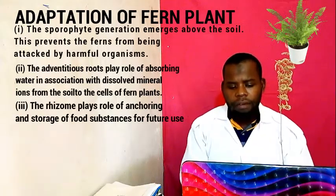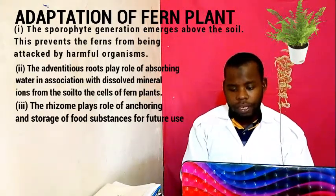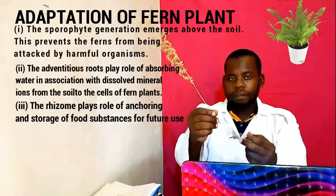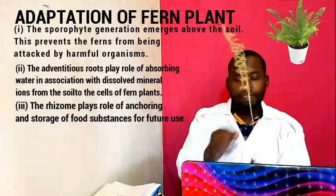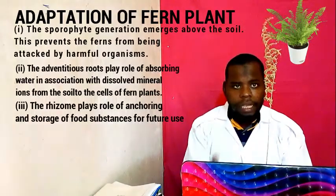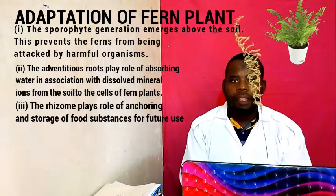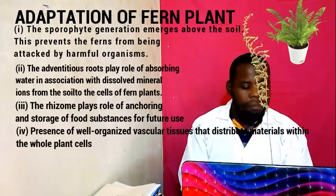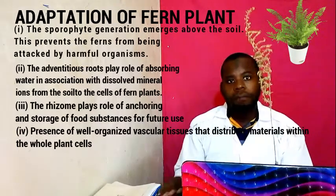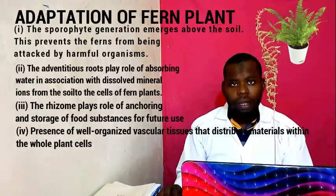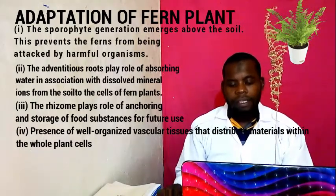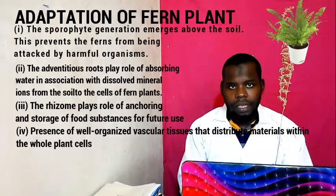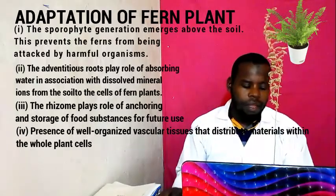It also has a rhizome for anchoring and storage of food substances for future use. The presence of the rhizome allows the Fern Plant to store food and survive. Number four: there is a presence of well-organized vascular tissue — xylem and phloem — that distributes materials within the whole plant cells.